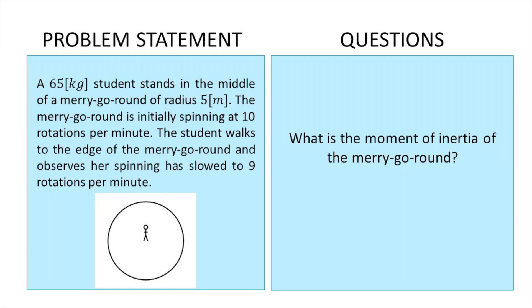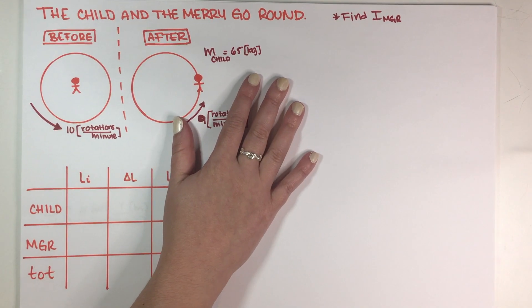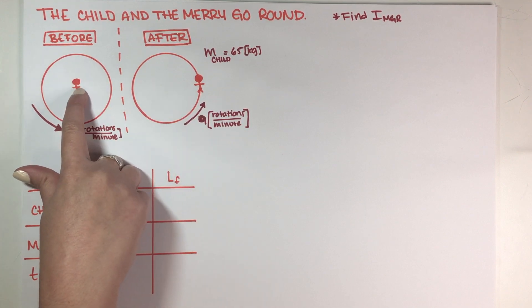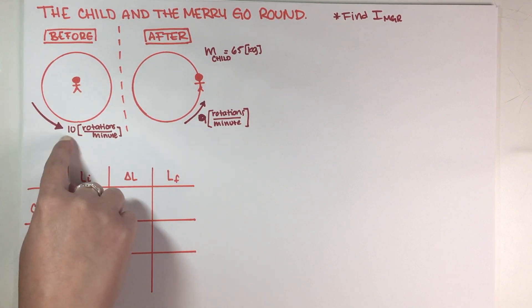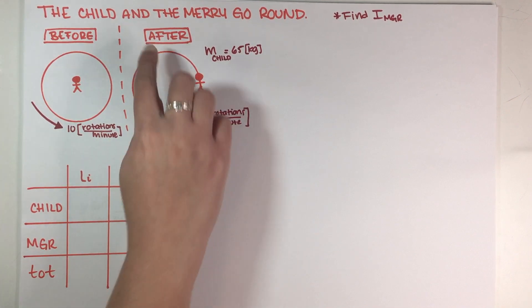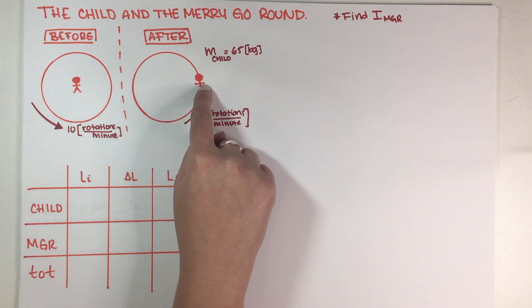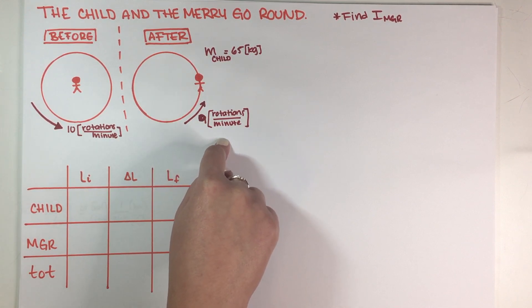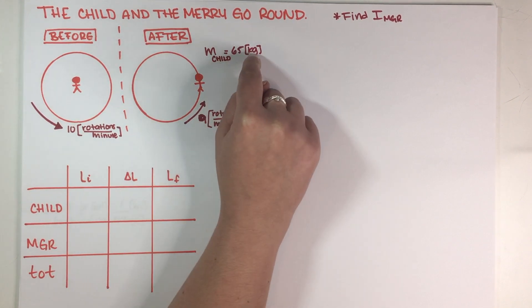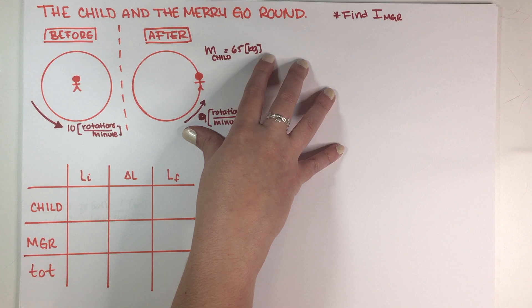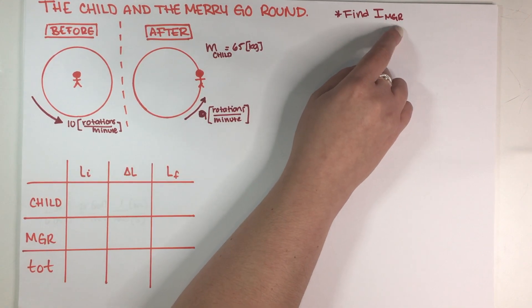I have everything written down here in my notes — I do have the before and after. The initial condition is that the child is at the center and the merry-go-round is spinning at 10 rotations per minute. The after condition is that the child moves to the edge and now it's spinning at 9 rotations per minute. The child's mass is 65 kilograms, and we have to find I of the merry-go-round.